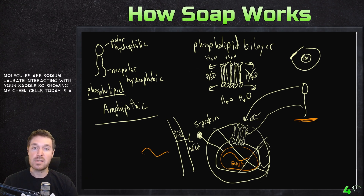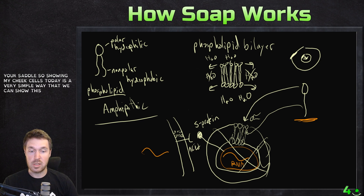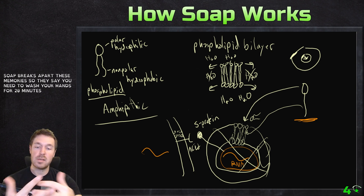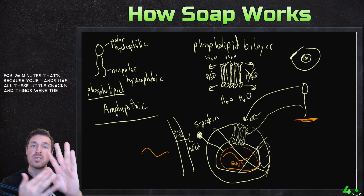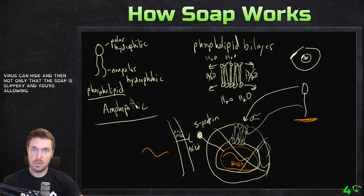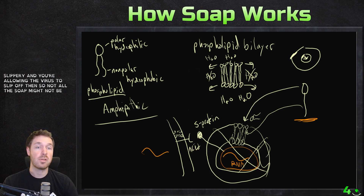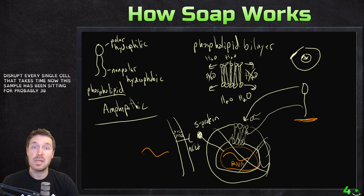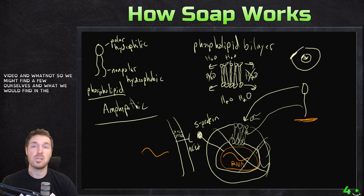Showing my cheek cells today is a very simple way that we can show this representation using the microscope. The key so far is understanding the chemistry of soap — soap breaks apart these membranes. They say you need to wash your hands for 20 seconds. That's because your hands have all these little cracks and things where this virus can hide. And not only that, the soap is slippery, allowing the virus to slip off. So not all the soap might rupture the virus — we might find some cells in my soap sample that are still intact. It doesn't disrupt every single cell, it takes time. This sample has been sitting for probably 30 minutes now.